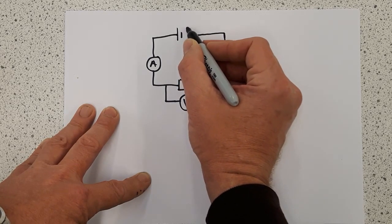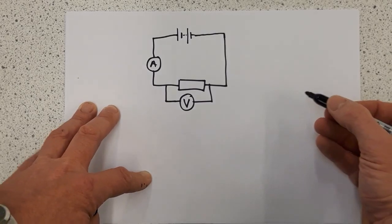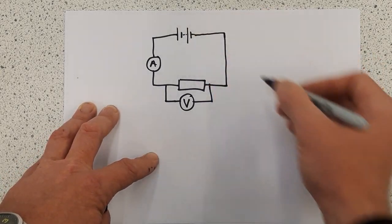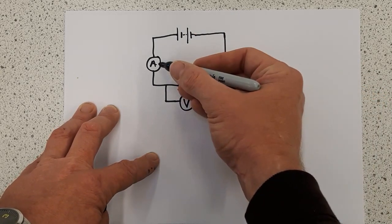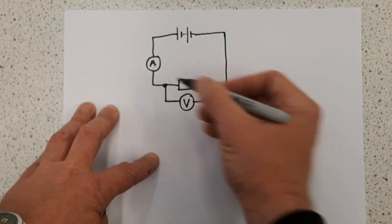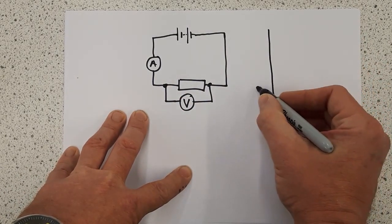And we'll use a big battery. So if I change the voltage by adding or taking away batteries, and I measure the current and I measure the voltage across a component in the circuit, I end up with a set of results that looks like this.